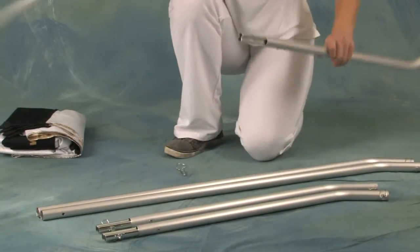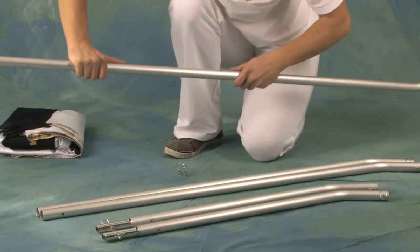Put the two sections of the crossbars together. Fit the clip into the hole and snap the clip closed.